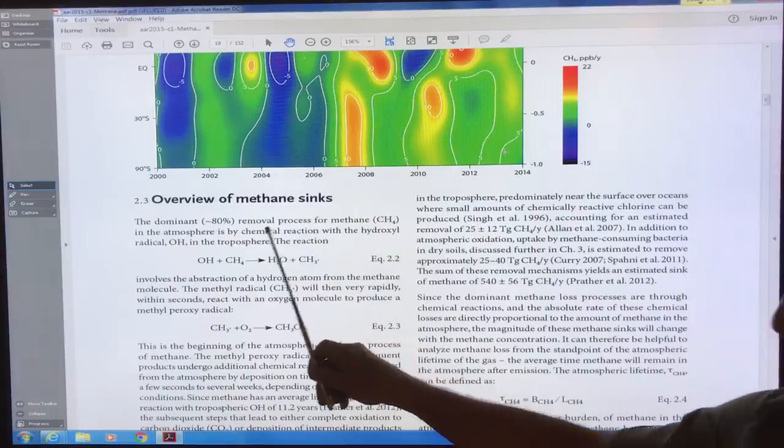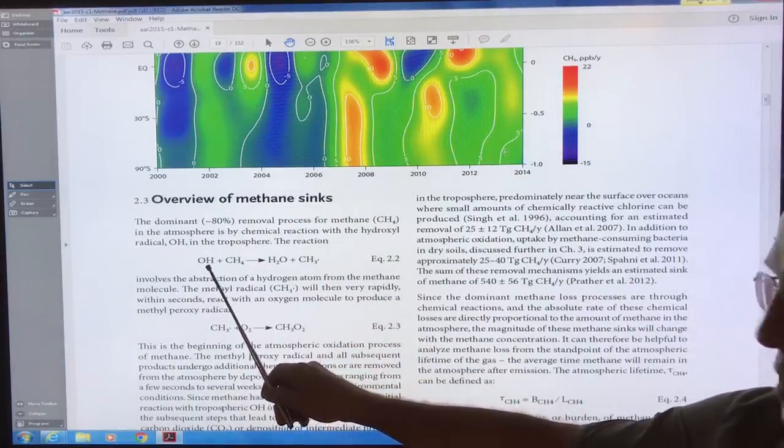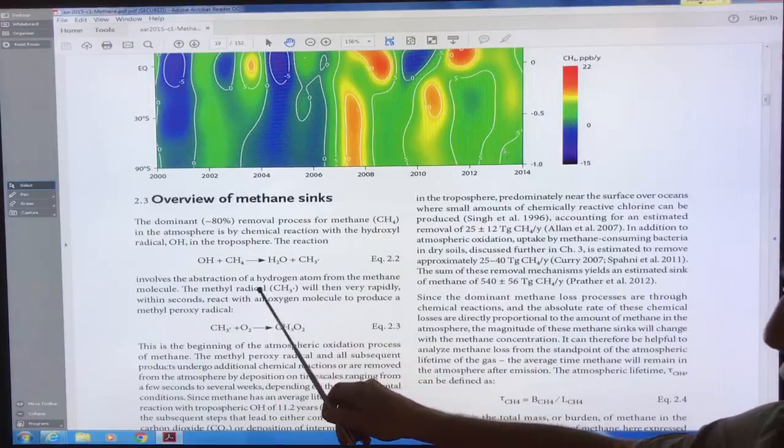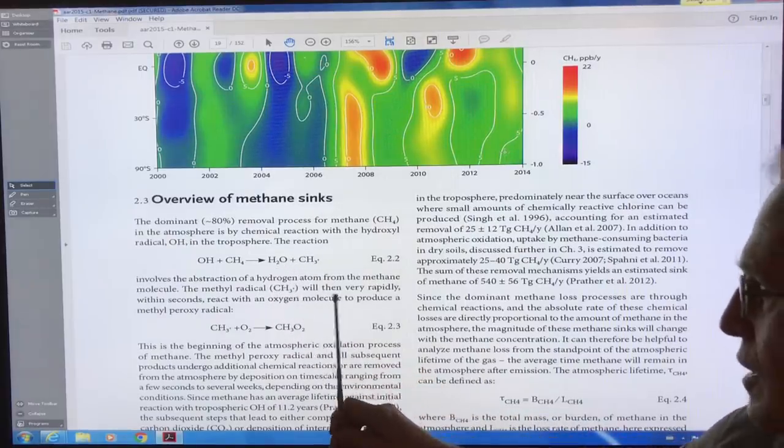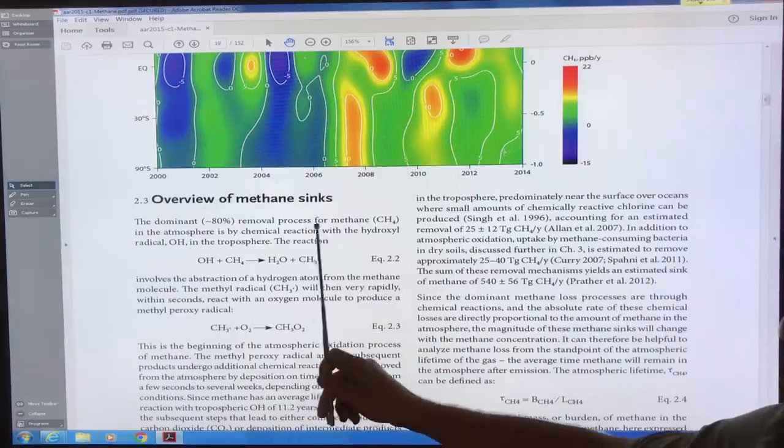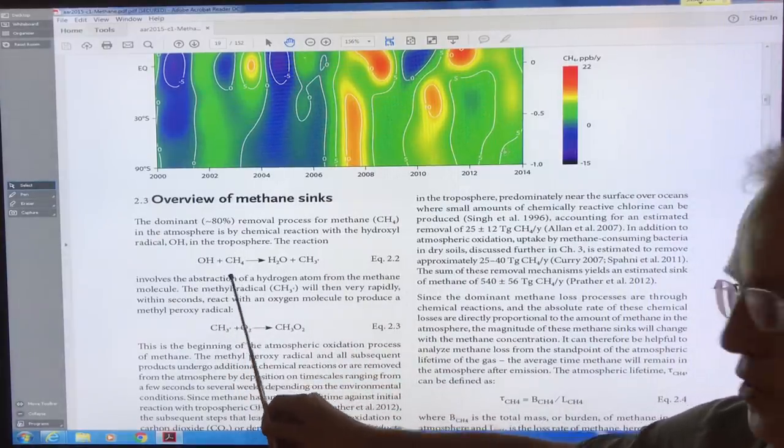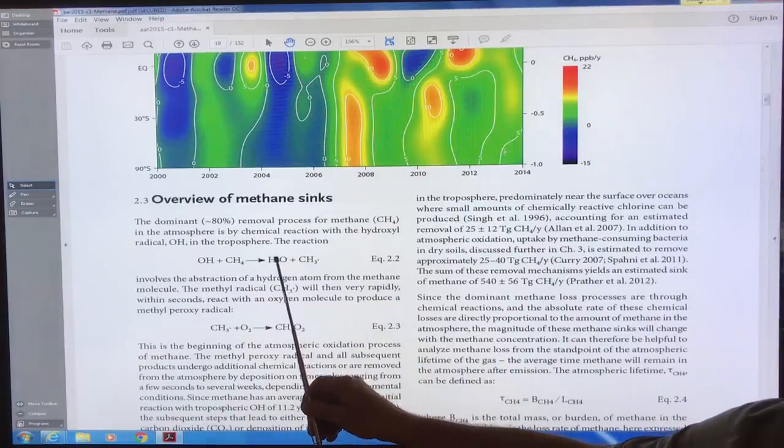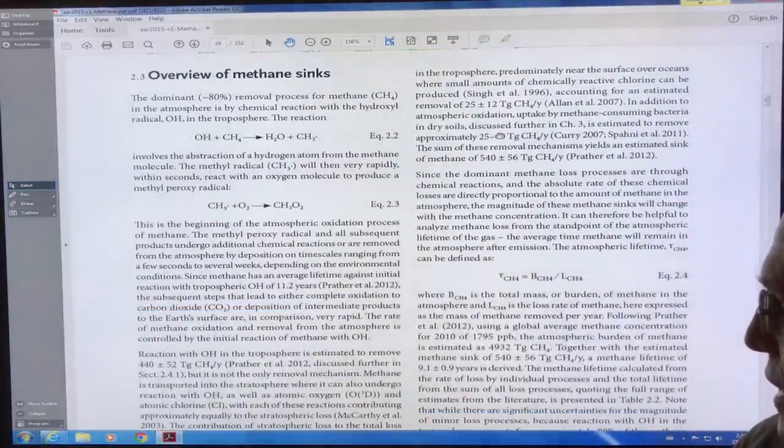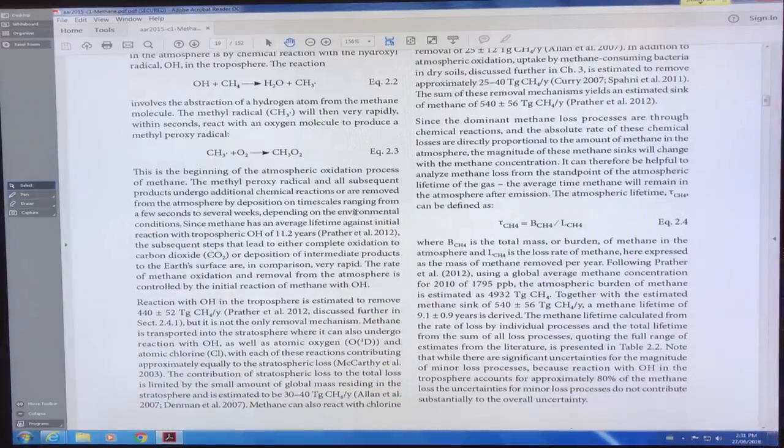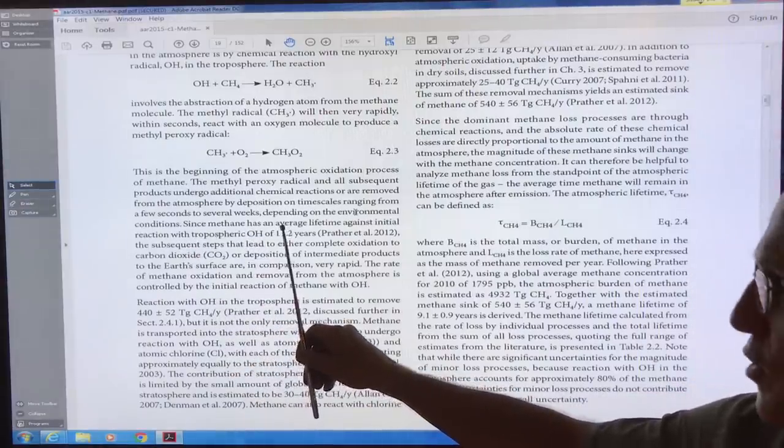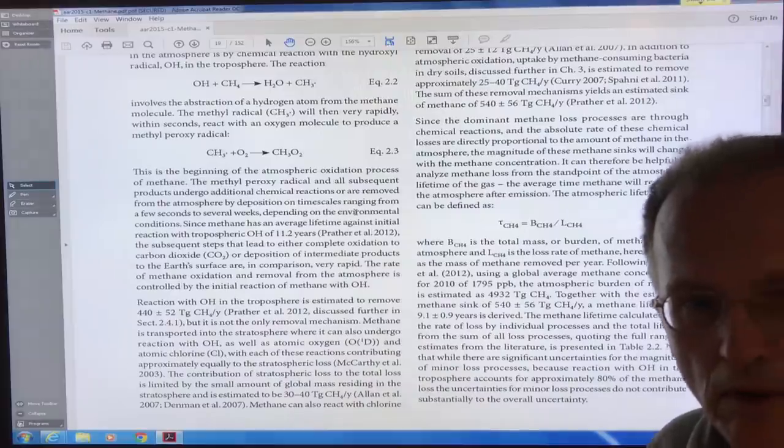Now the dominant removal process for methane is by chemical reactions with OH. So OH which is a negative charge reacts with the methane molecule. It produces water and this methyl radical CH3 dot which reacts very rapidly within seconds with an oxygen molecule to produce methyl peroxyl. So what you see is when this reaction occurs in the stratosphere it produces water in the stratosphere and it gives these noctilucent clouds that you can see. Now the lifetime of methane is against the initial reaction with OH is 11.2 years but then there's other reactions which bring it down to nine. Anyway, I'll continue, thank you.